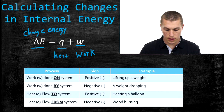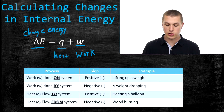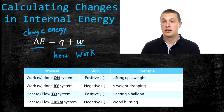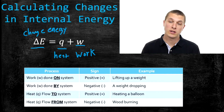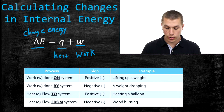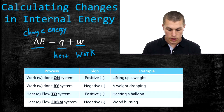Here is a table that shows you the signs that Q or W will have, depending on what types of processes are going on. We'll go through these examples quickly, and then we'll do a few problems.